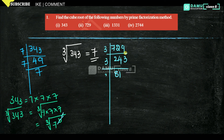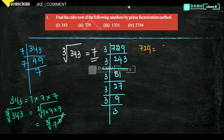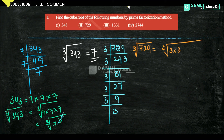Continuing dividing by 3: 3 × 27, then 3 × 9, then 3 × 3, then 3 × 1. So 729 can be written as 3 × 3 × 3 × 3 × 3 × 3. Cube root of 729 = cube root of 3 × 3 × 3 × 3 × 3 × 3.